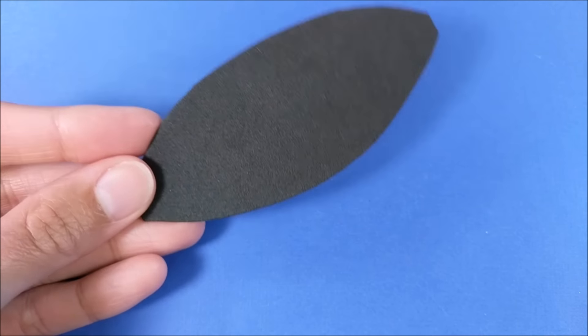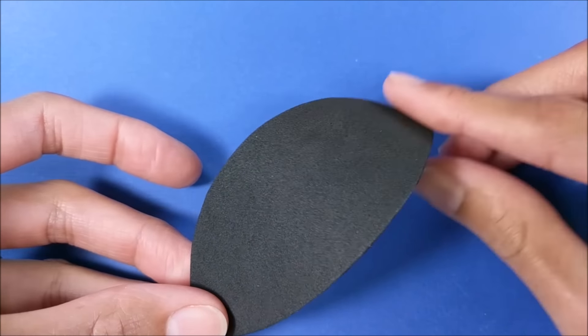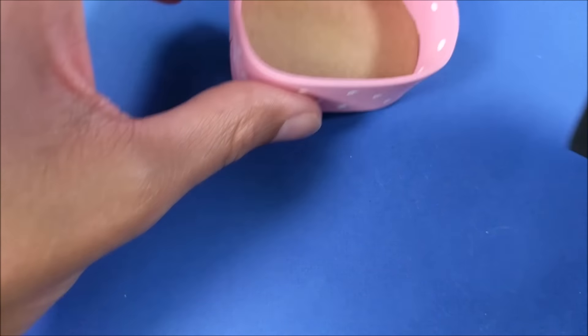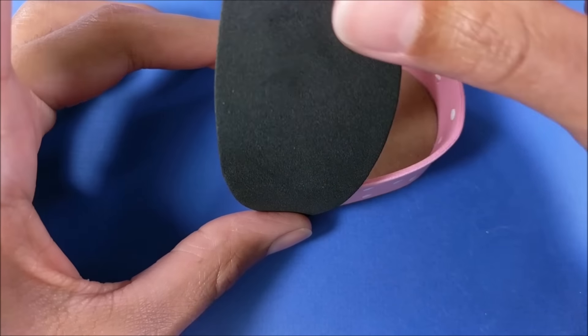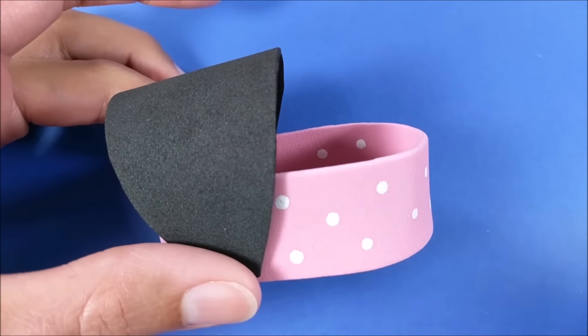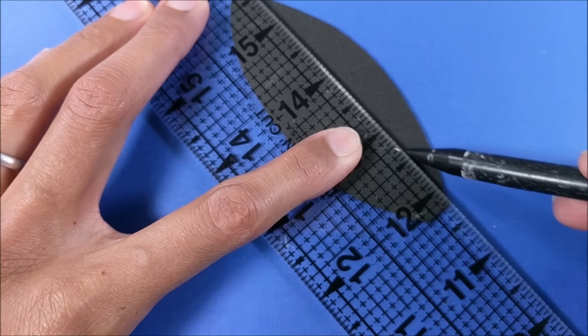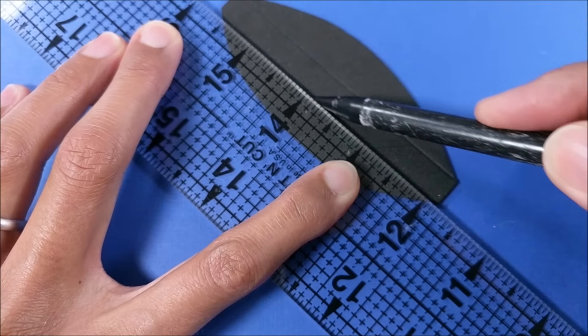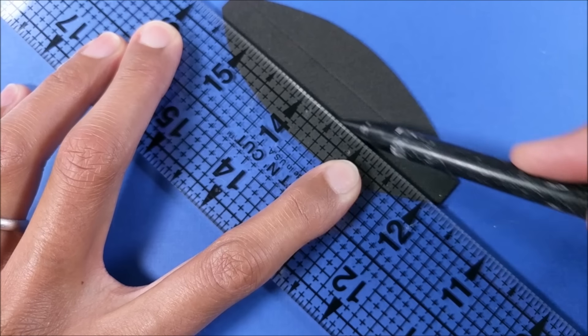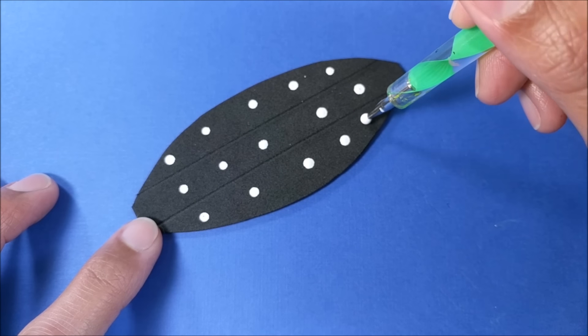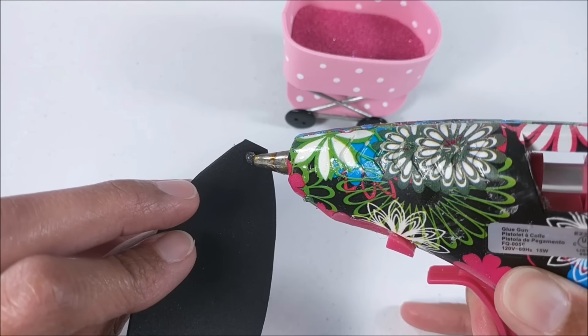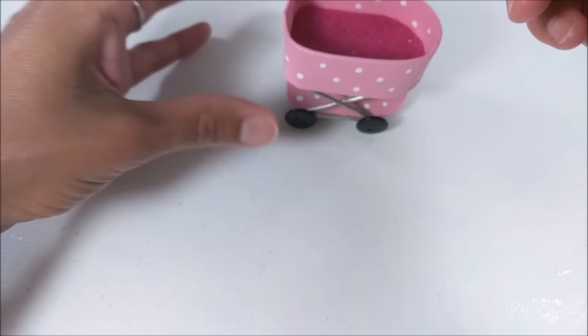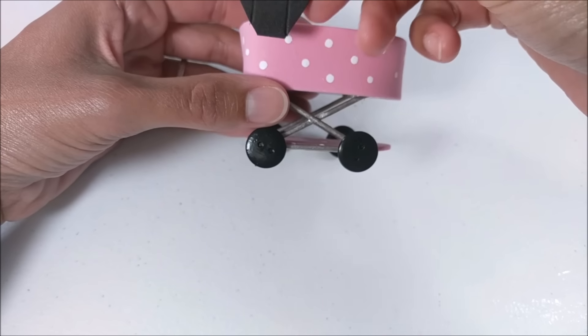And finally for the top section, I'm taking black craft foam. I've cut it here to this kind of leaf shape, then score two lines using a mechanical pencil with no light. And once again adding polka dots. When dry I glue to my carriage.